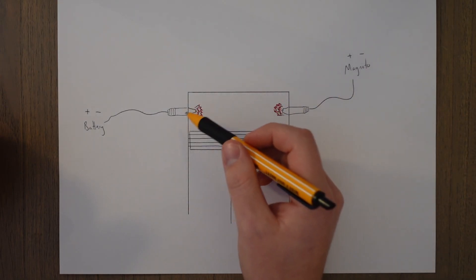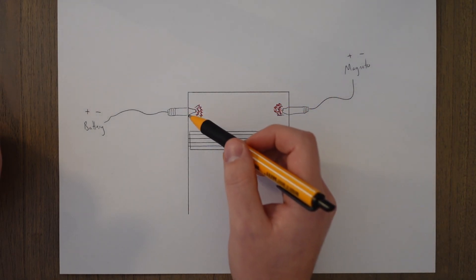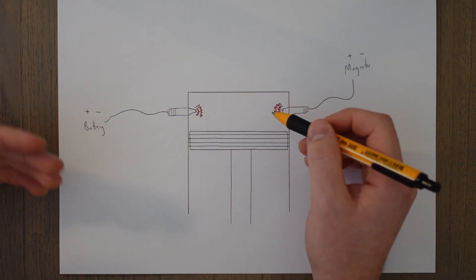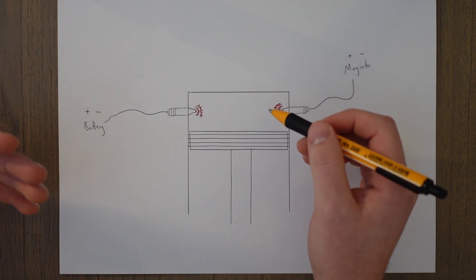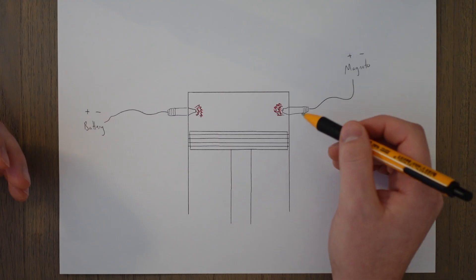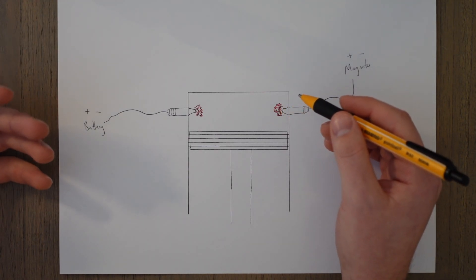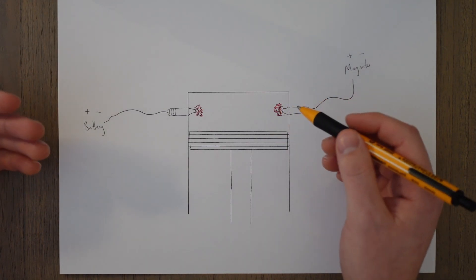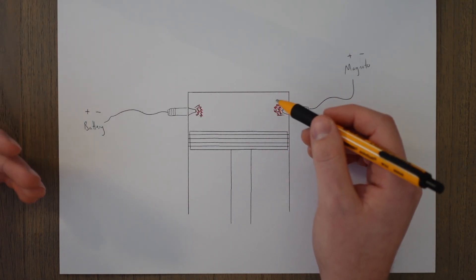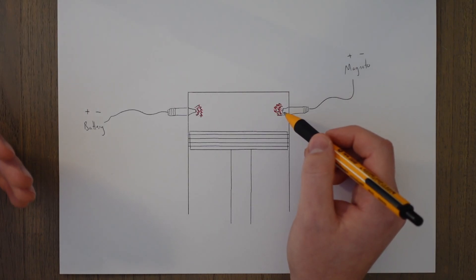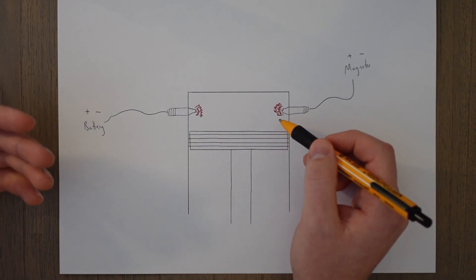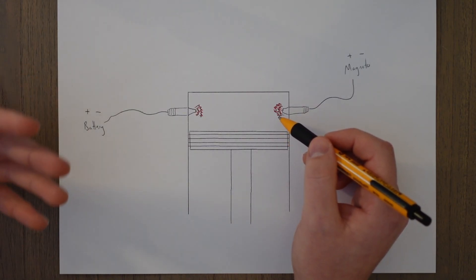There are usually two spark plugs per cylinder for redundancy purposes. Basically, if one fails, there's another one to still make that cylinder work, and that's one of the most common things that can happen. These are quite cheap components, so they fail fairly easily. The most common way that they fail is through something called fouling, where oil, fuel, or other contaminants make the spark plug very dirty and basically block off the area that is used to create that electrical spark.